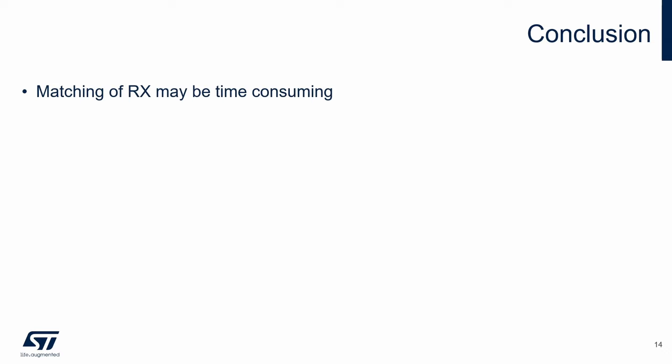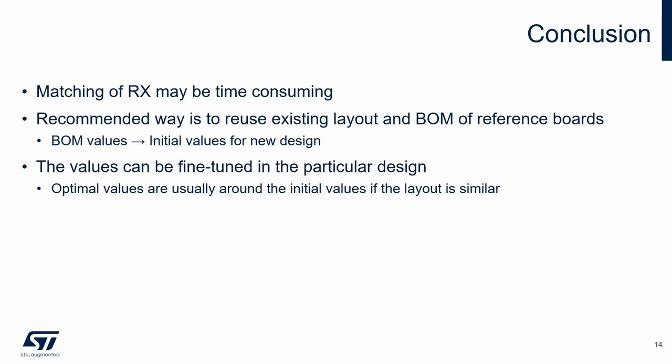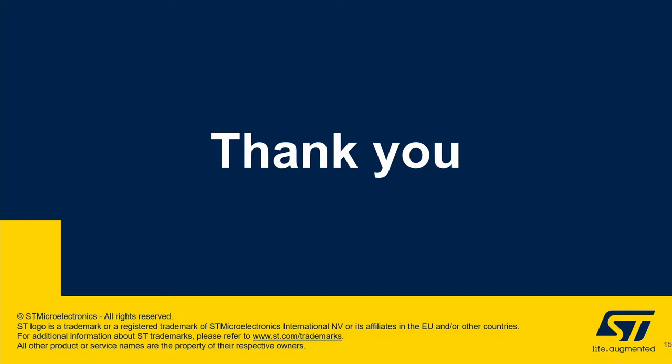Let's summarize the receiver part matching. Matching of the receiver may be time-consuming. To speed up the process, the recommended way is to reuse the existing layout and BOM of reference boards. The BOM values can be used as initial values for a new design, and these initial values can be fine-tuned if needed. If the PCB layout is similar, the optimum values are usually around the initial values. Typical measurements of the receiver part are sensitivity, standing wave ratio, and current consumption measurements. Thank you for your attention.